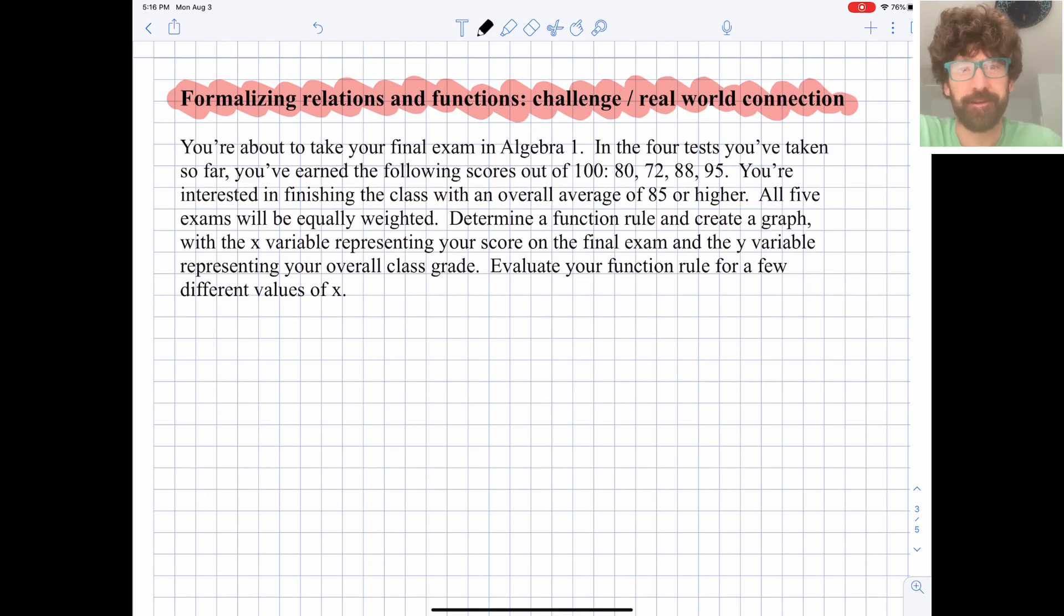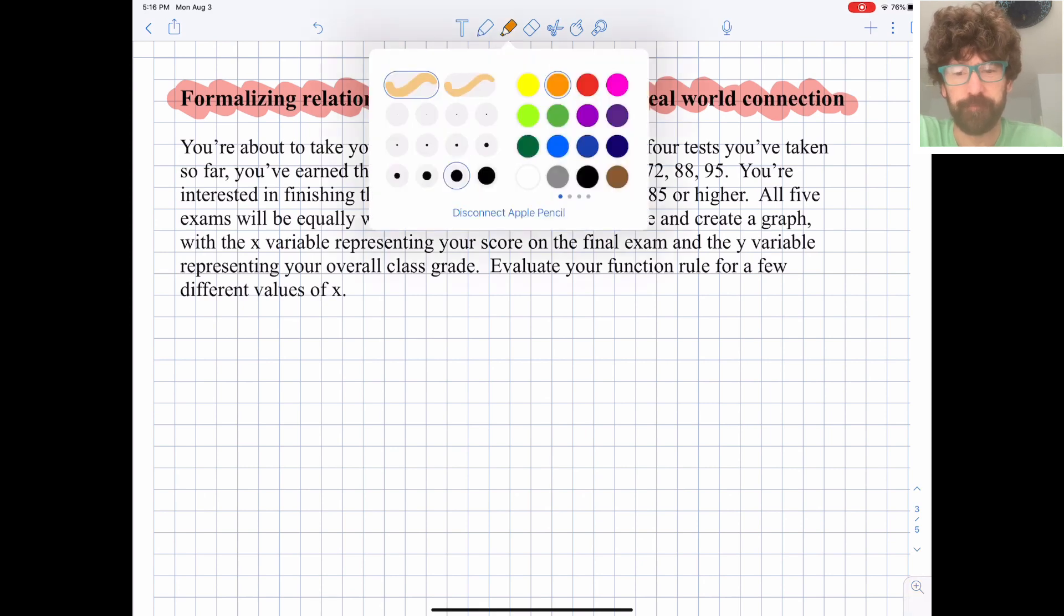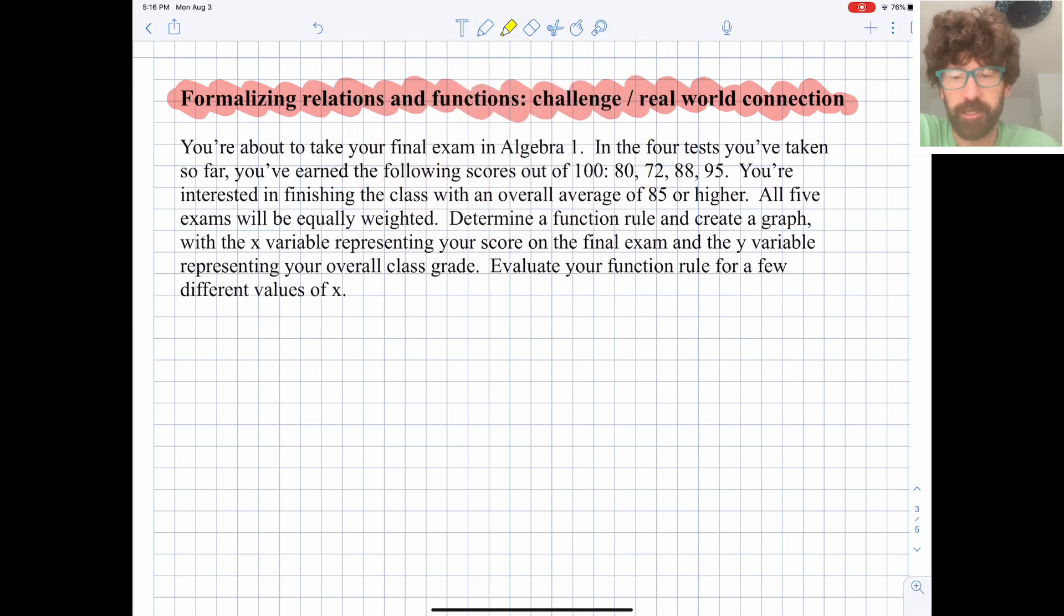So here's a scenario. You're about to take your final exam in Algebra 1. In the four tests you've taken so far, you've got the following scores: 80, 72, 88, and 95.